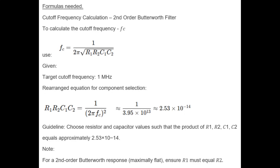Given a target cut-off frequency of 1 MHz, the rearranged equation for component selection gives: R1 × R2 × C1 × C2 equals 1 over (2π × F_C) squared. This works out to approximately 1 over 3.95 times 10 to the 13th, which is approximately 2.53 times 10 to the minus 14th.